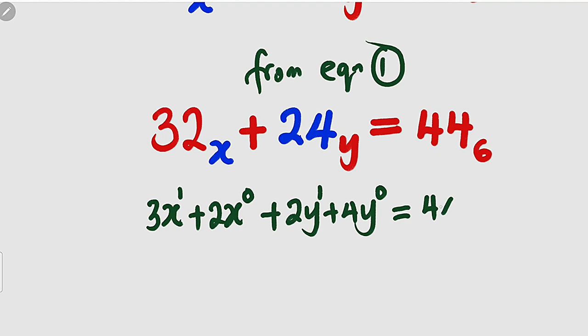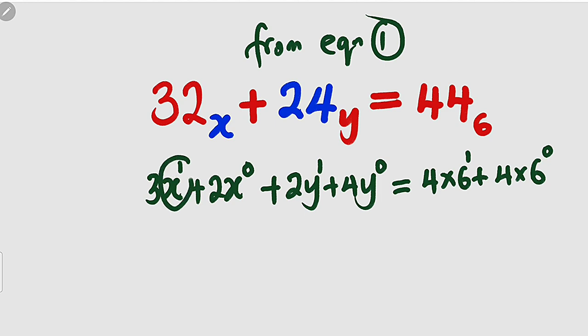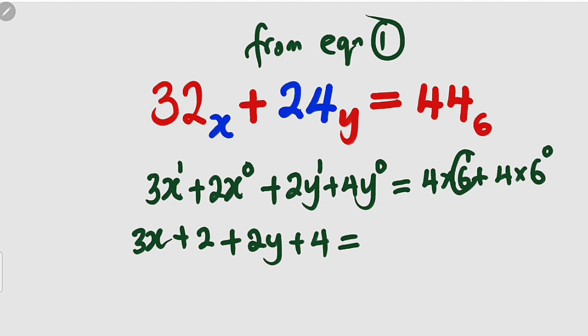You move to the right. You have 4 multiplied by the base which is 6 plus 4. The second digit multiplied by 6. Again, you assign index 0, 1. Let's simplify. We have x to the power of 1 is x times 3 is 3x plus x to the power of 0 is 1 times 2 is 2 plus y to the power of 1 is y times 2 is 2y. Then plus y to the power of 0 is 1 times 4 is 4. This is equal to 6 to the power of 1 is 6 times 4 is 24 plus 6 to the power of 0 is 1 times 4 is 4.